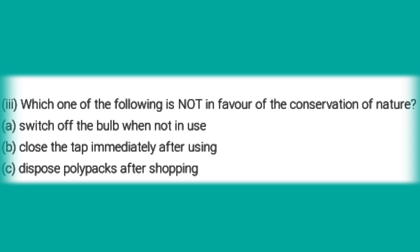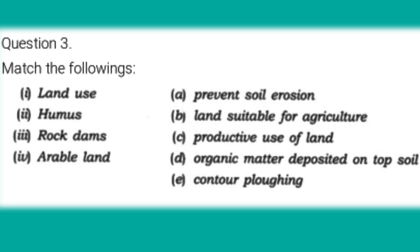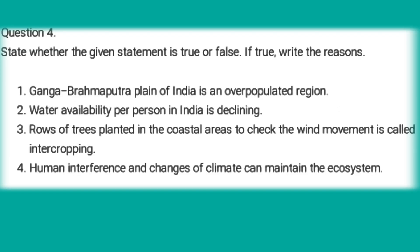Which one of the following is not in favor of conservation of nature: switch off bulb when not used, close the tap immediately after using, or dispose polythene properly after shopping? Answer: Dispose polythene packs after shopping. Third question — match the following: land use is productive use of land; humus is organic matter deposited on top of soil; rock dams prevent soil erosion; arable land is land suitable for agriculture.